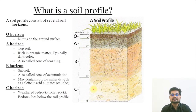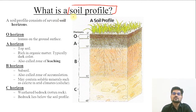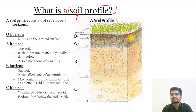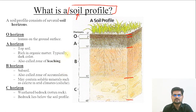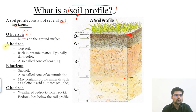An important thing we study in biogeography specifically is the soil profile. When we study the soil profile, we must understand that soil has several layers. Looking at this image, the different layers are known as different horizons — Horizon O, A, B, and C.